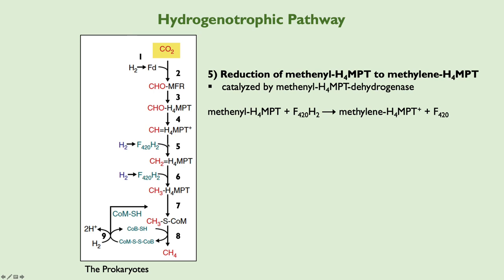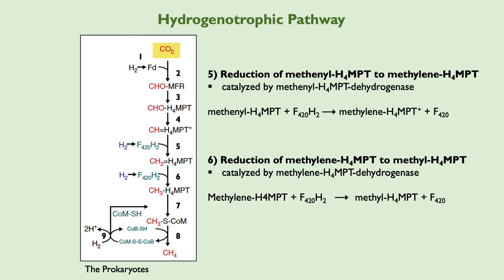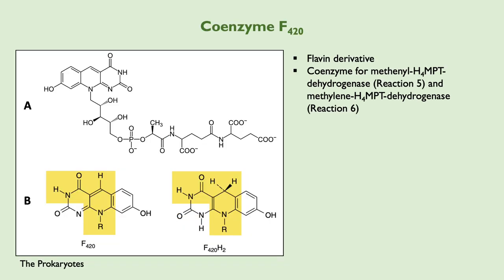Step 5 is reduction of the methenyl group to a methylene group, still bound to H4MPT. Step 6 is reduction of this methylene group to a methyl group attached to H4MPT. Both reduction reactions are catalyzed by dehydrogenases using coenzyme F420. Coenzyme F420 is a flavin derivative, structurally similar to flavin mononucleotide or flavin adenine dinucleotide, being derived from riboflavin. The oxidized and reduced forms of coenzyme F420 are used in these reduction reactions.